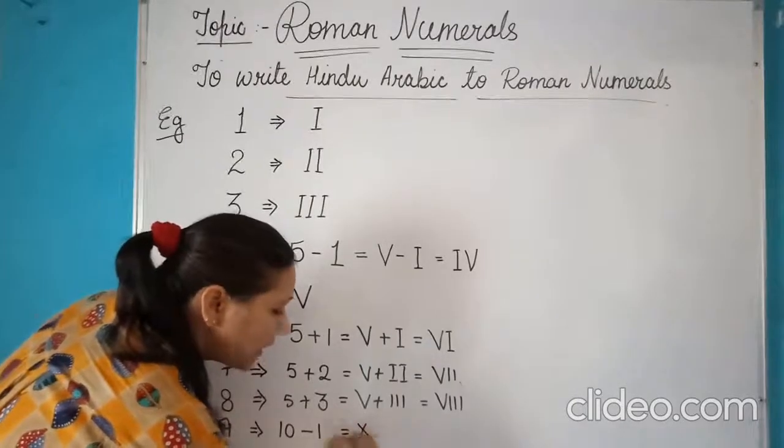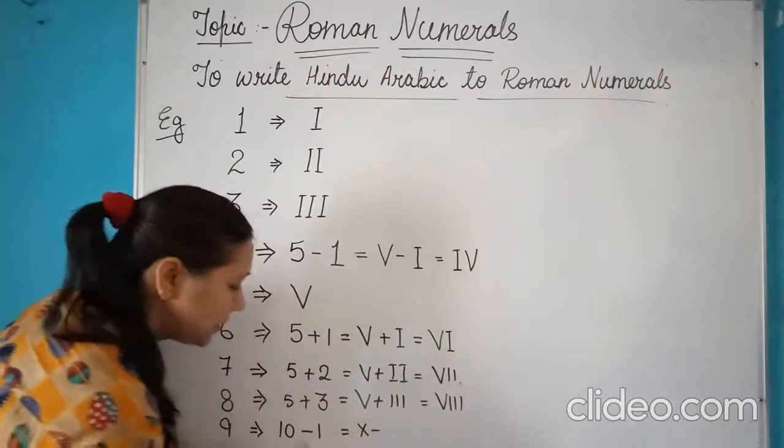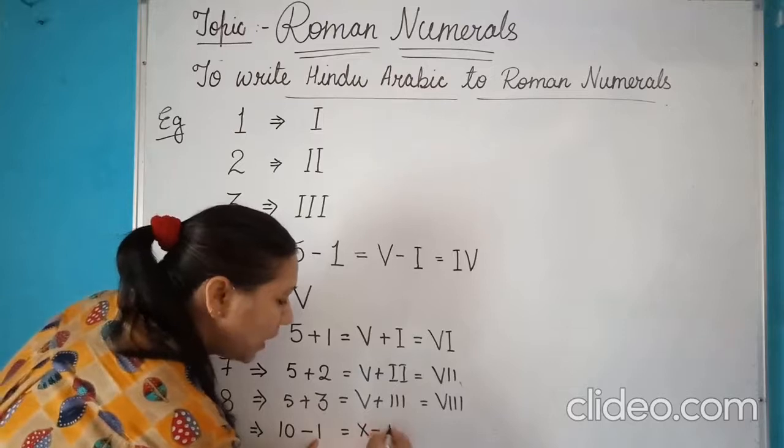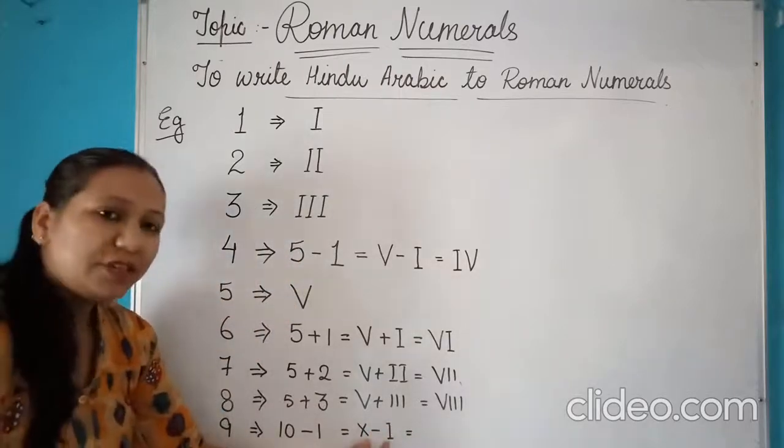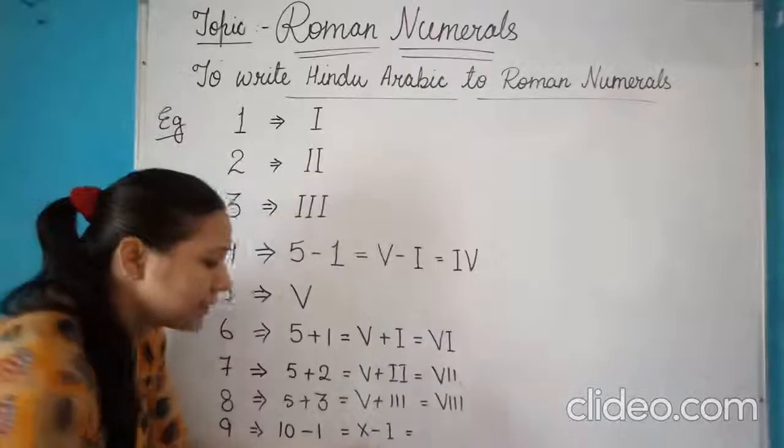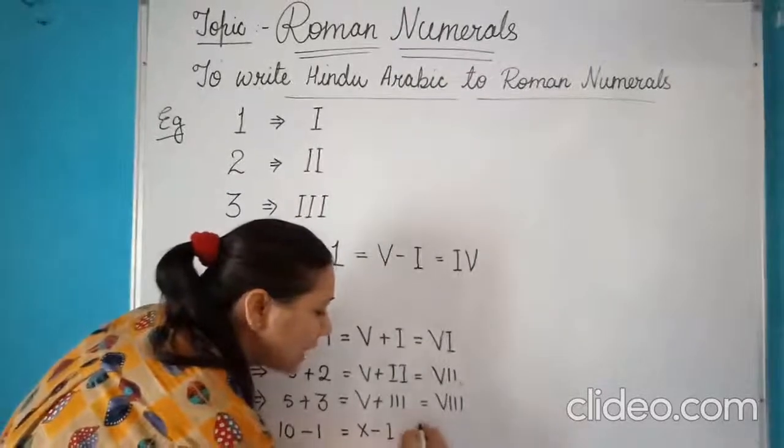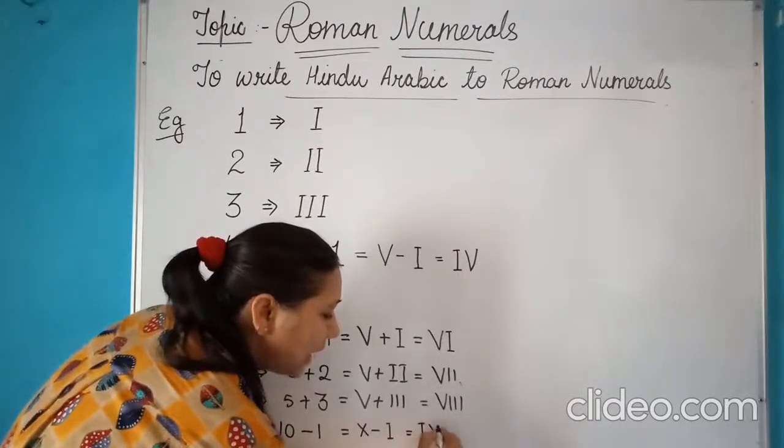Now the symbol for 10 is X minus the symbol of 1 is I. Again, we have the subtraction rule. And since it is subtraction rule, so we will write it as a prefix and then X. So the symbol of 9 is IX.